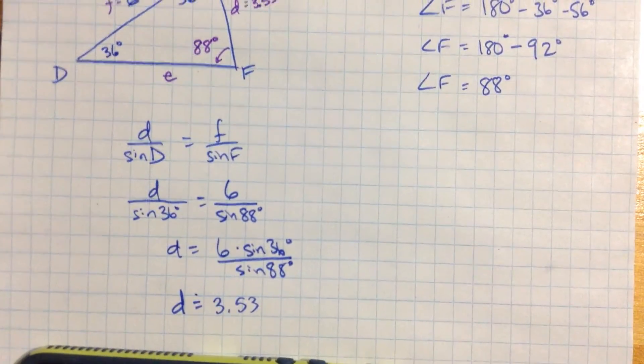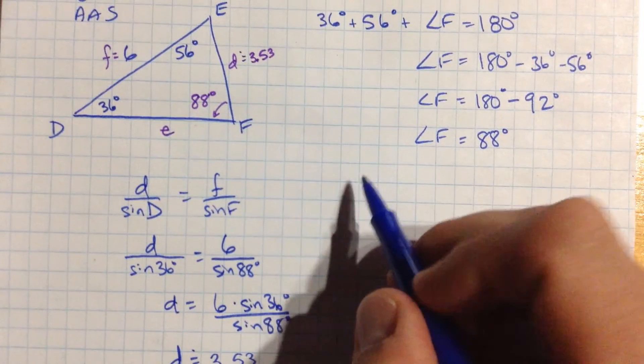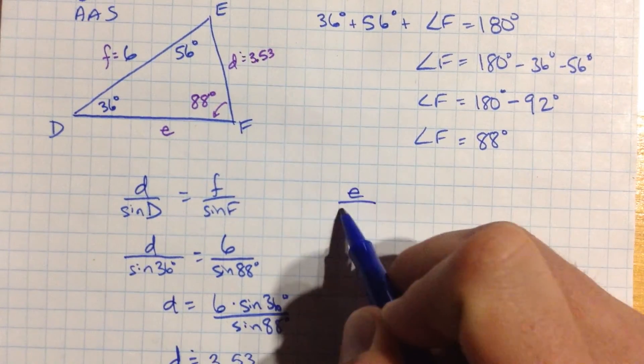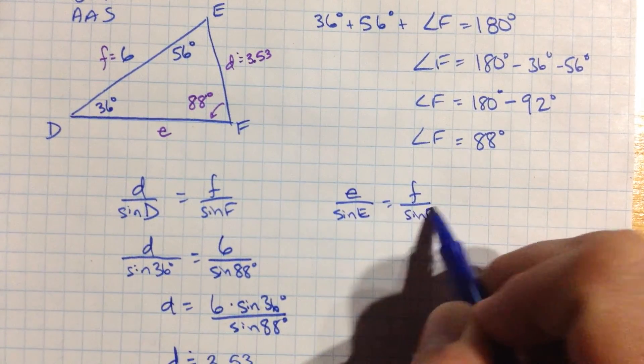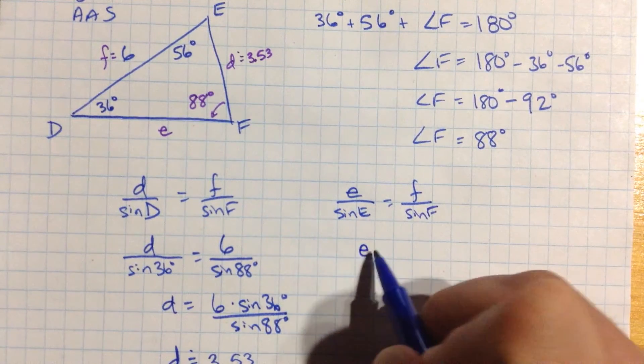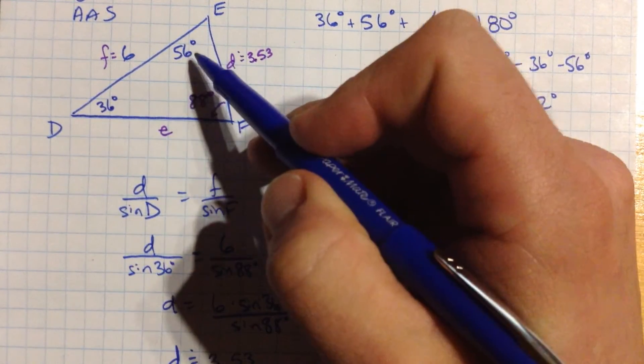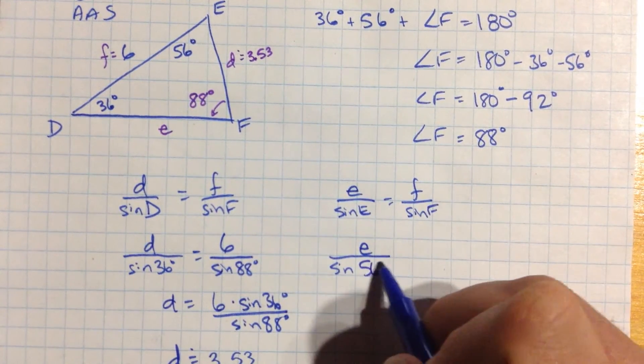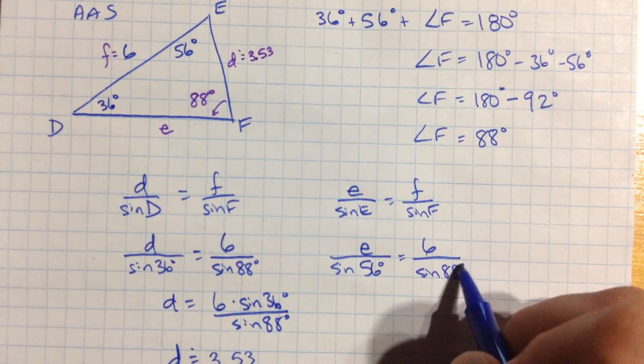We have one side left to find. That side is e, and we're going to use the same setup. e over sine of e is f over sine of f. That means e over sine of 56 equals 6 over sine of 88 degrees.